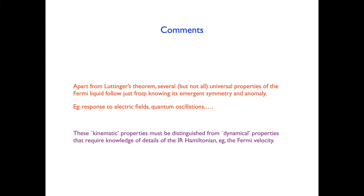A really nice observation is that Luttinger's theorem follows directly from this anomaly. In the UV theory, when we turn on a 2-pi flux, discrete unit translations will no longer commute. A heuristic way to understand this: moving a 2-pi flux around a plaquette, if there's an average charge of nu per site, produces an Aharonov-Bohm phase of 2 pi times nu. Using the embedding of translations in the IR theory and their new non-commutation algebra in the presence of 2-pi flux, equating these two results directly gives Luttinger's theorem.